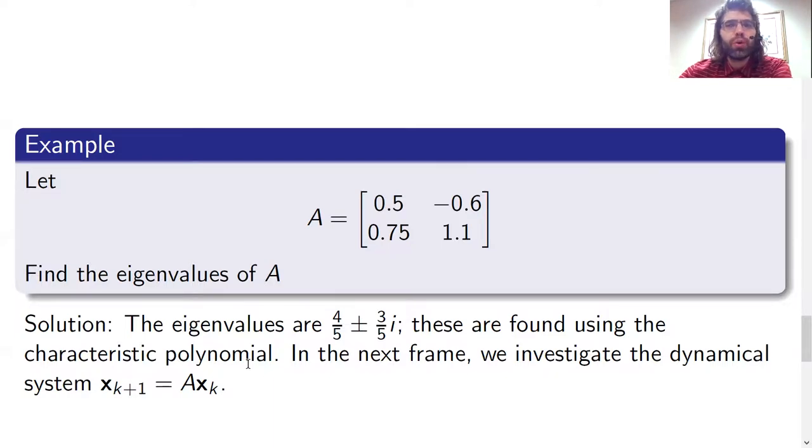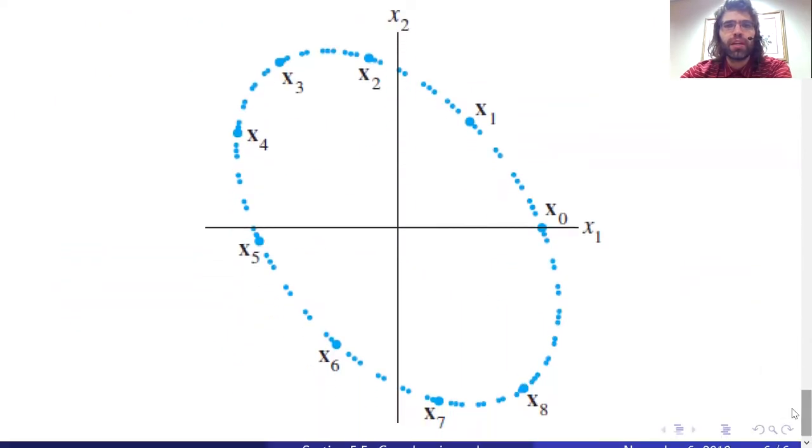In the next frame, we'll pick an initial value and look at this discrete dynamical system. What we again see is that these complex eigenvalues cause rotation. This time, the rotation is elliptical, but these complex eigenvalues cause this dynamical system to go around and around.